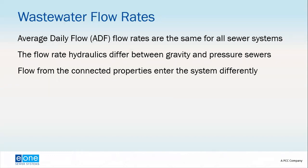The average daily flow is going to be the same for all systems — it doesn't matter what kind of pipe is running down the street. The homeowner, residents, businesses, and industry are going to generate the same amount of flow. However, with pressure sewer systems, in many cases the average daily flow might be lower than expected. A lot of that is attributed to communities with failed septic systems where homeowners are very aware of water usage.